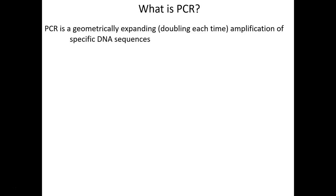So much of what we do now in the lab with DNA is based on the technology of PCR. At its core, PCR is a DNA amplification technique. The analogy often used is that it's a Xerox machine for DNA — a pretty good analogy. If you have just a handful of DNA sequences and you need billions of them, PCR can achieve that. It's like DNA replication in a tube. The classic definition of PCR is that it is a geometrically expanding — just means doubling with each cycle — amplification of specific DNA sequences.